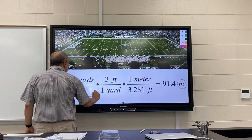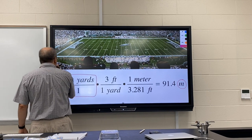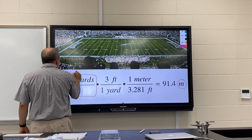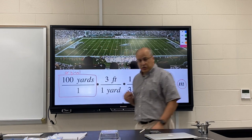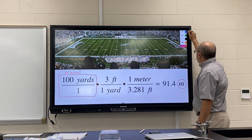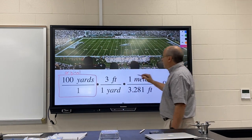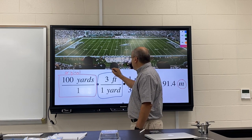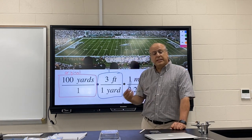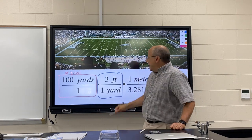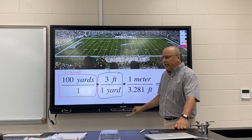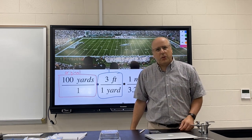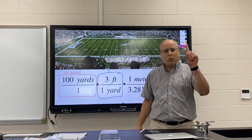You start with the original written as a fraction. Then you multiply by a fraction equal to one. What does that mean? It means that the top and the bottom are equal to each other. So when you divide three feet by one yard, you get one.